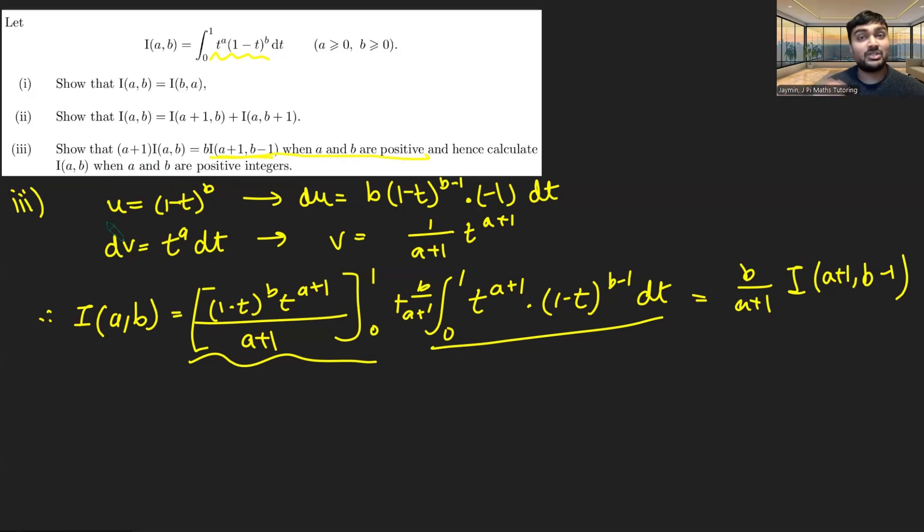And then we're told, hence calculate the value of I(a,b) when a and b are positive integers. So now not only are we allowed to assume that a and b are positive, but also that they are integers. And the word hence is used here, which suggests that we have to use this part, the thing that we've just shown, but also potentially earlier parts as well. So hence is a really good word to look out for in STEP exams.